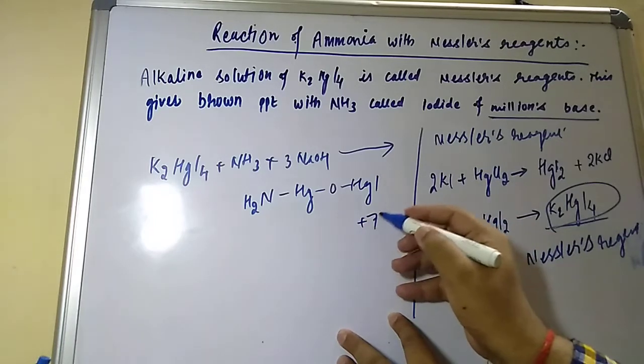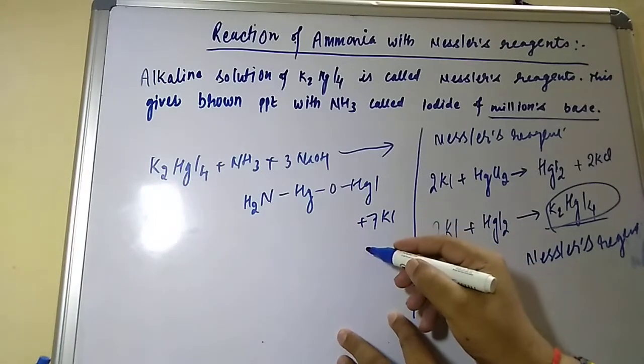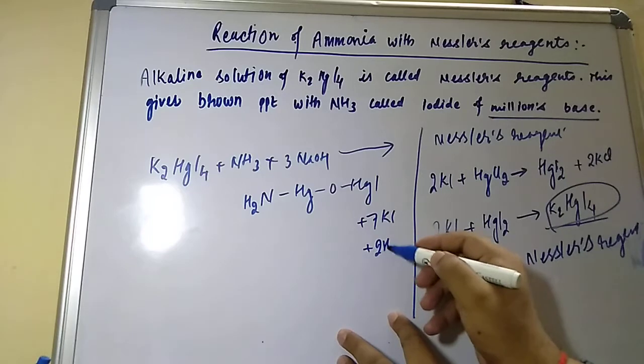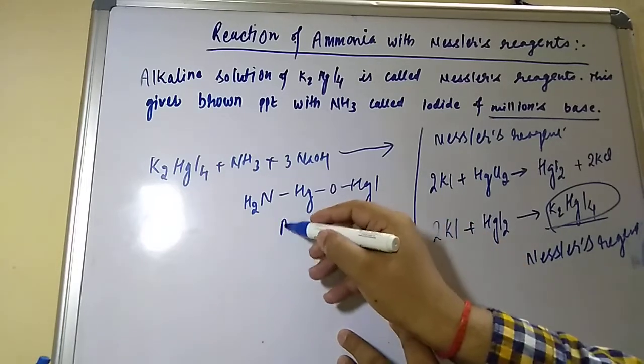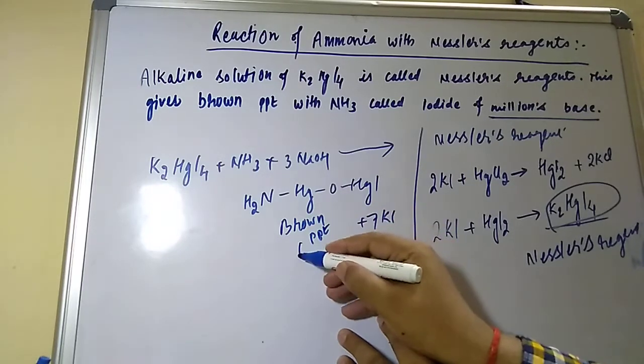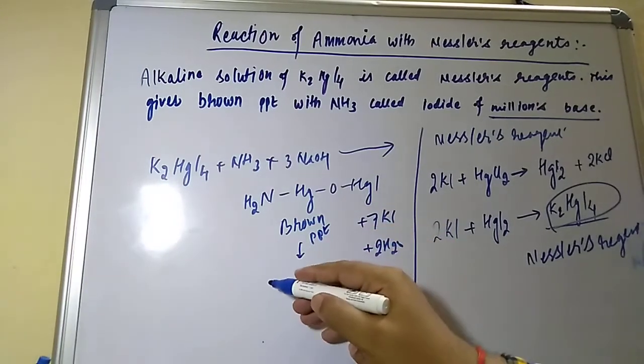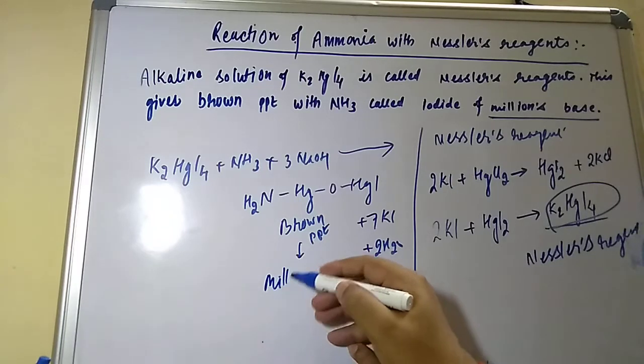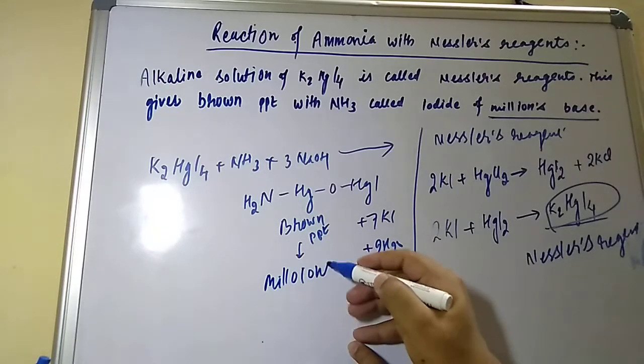Plus it will give 7KI plus 2 water molecules. This brown precipitate is also known as Millon's base, M-I-L-L-O-N-S, Millon's base.